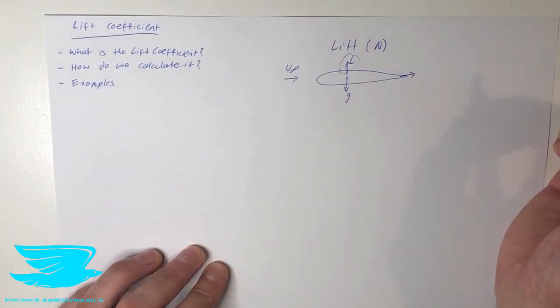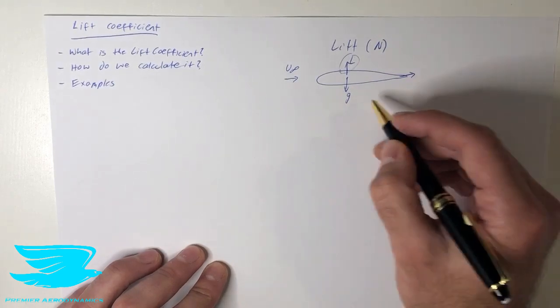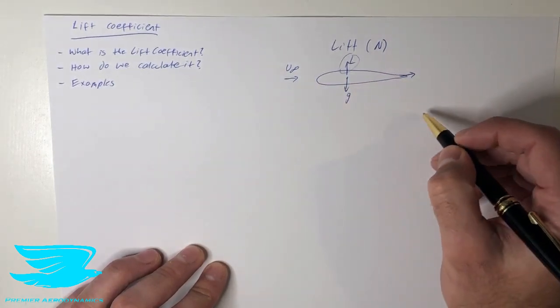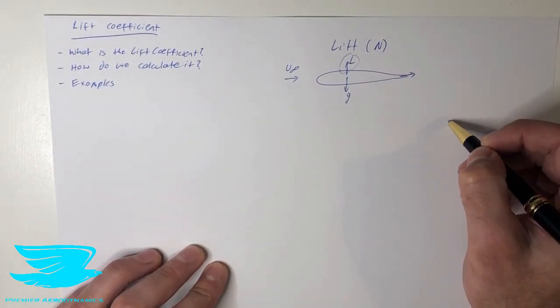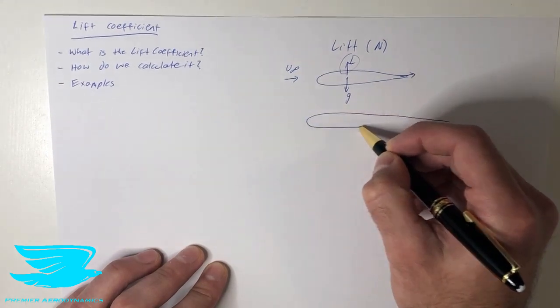So the question is, if we have two objects, one which is this long, but then we have another one, exactly the same shape, but now it's much bigger,